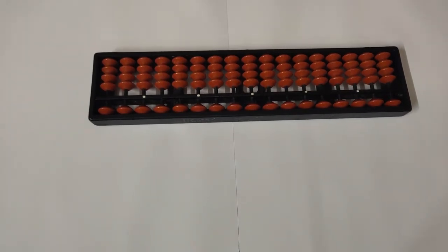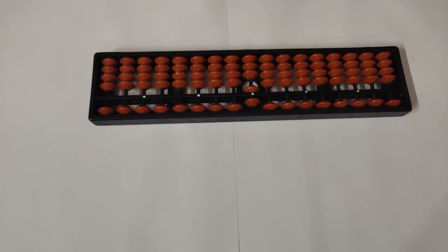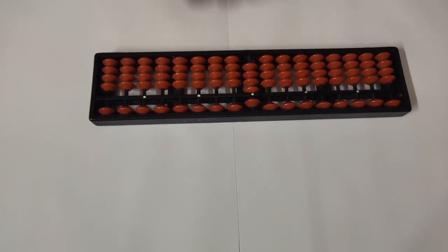We will start the visualization of numbers. This is one, this is two, three, four. The upper bead is five, so this is considered as five. This is six, seven, eight, and nine. Now you might be asking, what about ten?